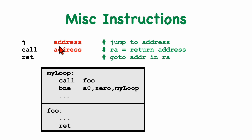Both target addresses for the jump and call instruction can be specified symbolically and can be any address in memory. With an RV32 processor this is a 32-bit address, and with RV64 we could have an address larger than 32 bits. You can't put just any 32-bit address into an instruction that is itself only 32 bits in size. In fact, these three instructions are pseudo-instructions — not machine instructions. The assembler will translate them into one or more machine instructions, determining which are required and replacing the pseudo-instruction accordingly.